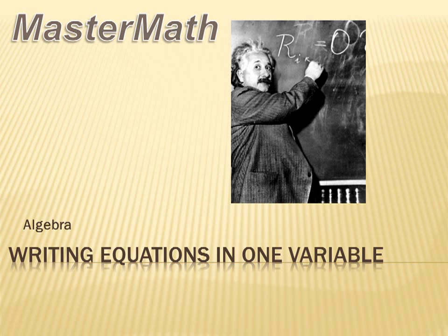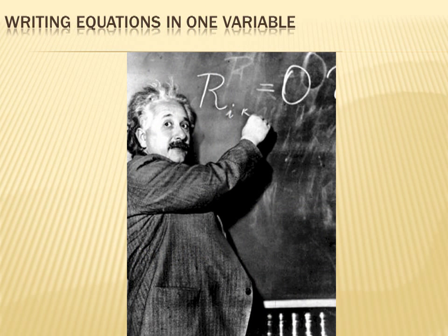Welcome to Master Math, you Einsteins. Today we're going to be talking about writing equations in one variable. In one variable means that there's only one variable in the equation. And it doesn't take an Einstein to figure this thing out, especially if you use some good techniques to convert the word problem into an algebraic expression or equation.